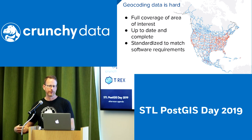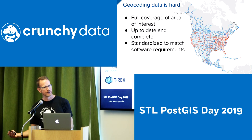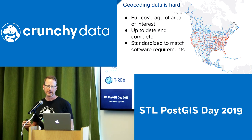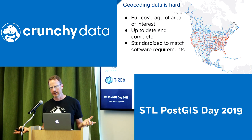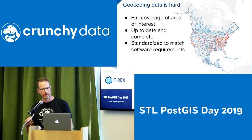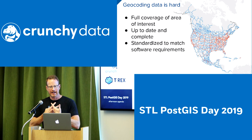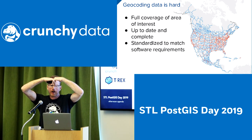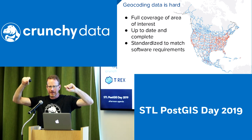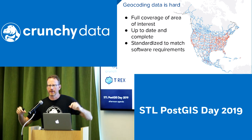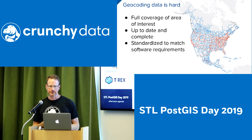Your data needs to be standardized to match the software requirements — the expectation of the software for what's inside the data have to match. That's where you get address standardization. If the software expects 'south' fully spelled out but your data is full of S's, or if your software expects 'avenue' spelled out but your data has 'av', you're going to have a problem. The two go together, and it's very difficult to build an arbitrary geocoder.